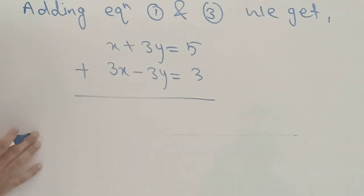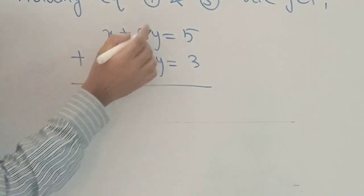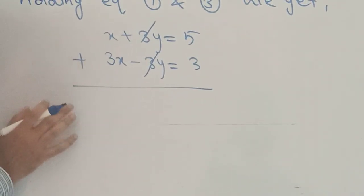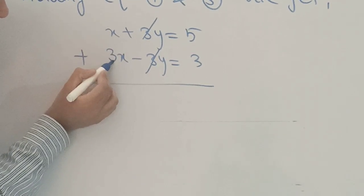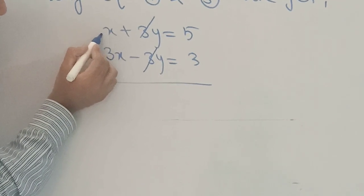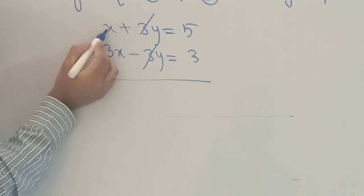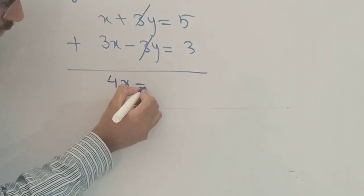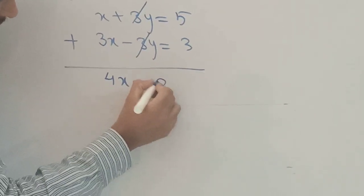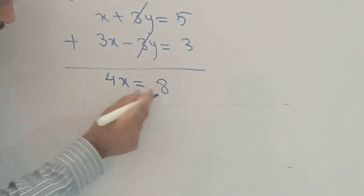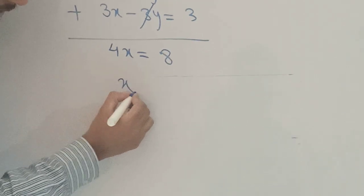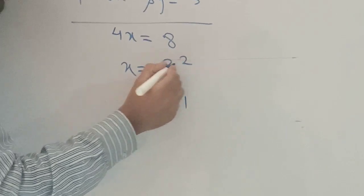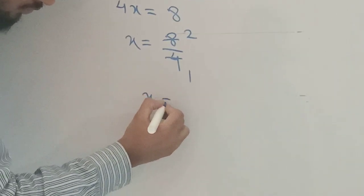When we add, plus 3y and minus 3y cancel out because they are opposite in sign and same in number. For the x terms: 1x plus 3x gives 4x. On the right side, 5 plus 3 equals 8. So 4x equals 8. Dividing both sides by 4, we get x equals 8 divided by 4, which gives x equals 2.